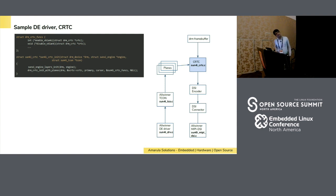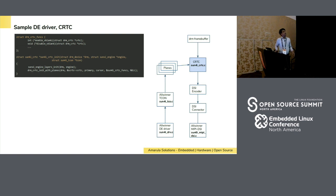The next part is the CRTC — Cathode Ray Tube Controller in Linux terminology. One of the planes from the display engine plane area needs to create CRTC images, which are further processed in the next stages. We need to create a CRTC driver as well. This is a typical CRTC driver in Allwinner. There is a Sunxi engine layer in it with controller-specific CRTCs.